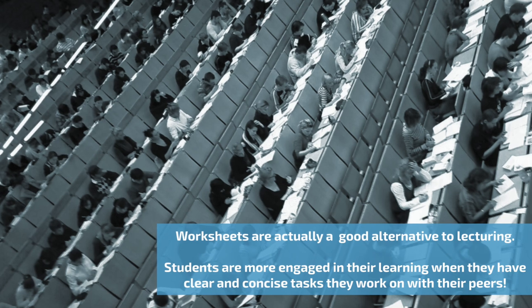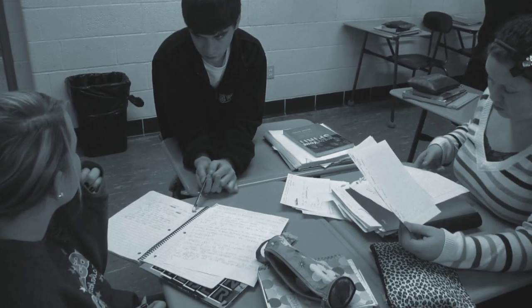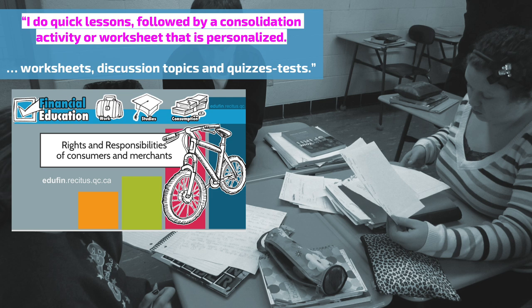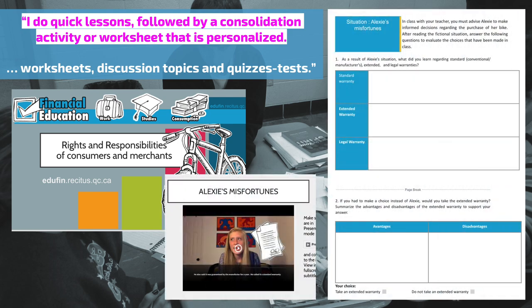Worksheets are a good alternative to lecturing. Students are more engaged when they have clear and concise tasks they work on with their peers. One that comes to mind is the rights and responsibilities of consumers and merchants series. In the Google Slide deck available, students tour more than five videos of Alexi as she navigates the purchase of her new bike. Students learn about different warranty types and their rights when making a purchase, and they are asked to put themselves in her shoes and make a warranty choice they can justify as being best for them.